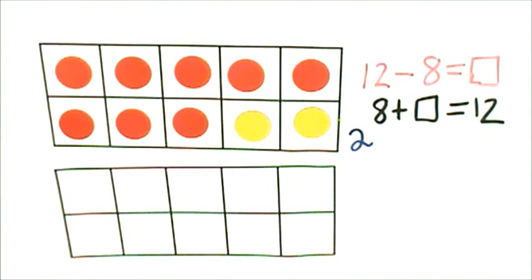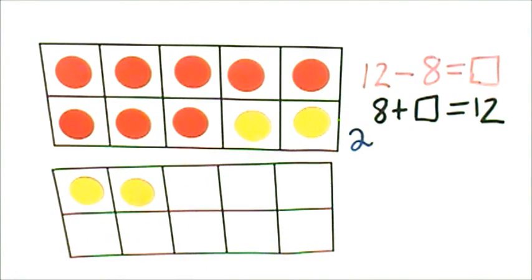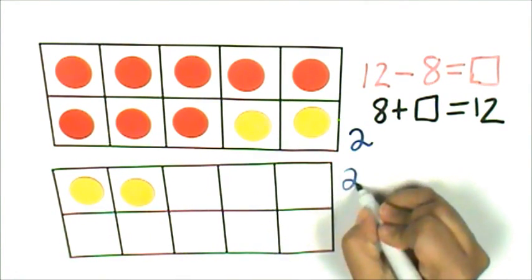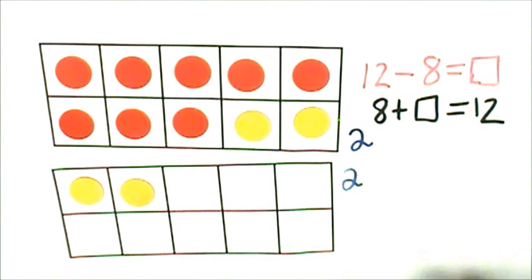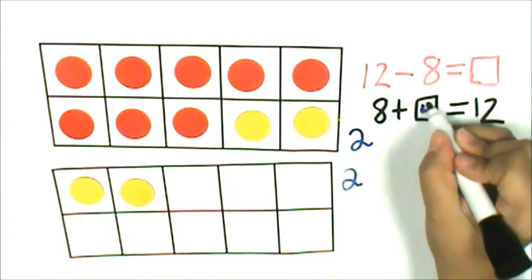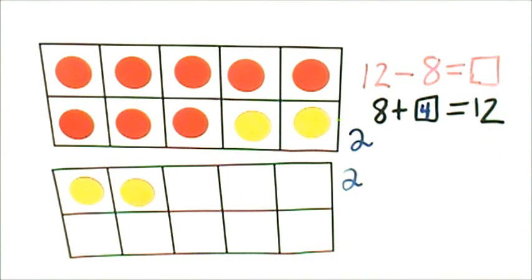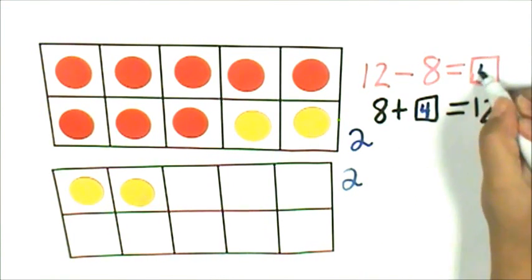Next I will count on until I get to 12: 10, 11, 12. That's 2. 2 and 2 is 4. That means 8 plus 4 is 12. 12 minus 8 is 4.